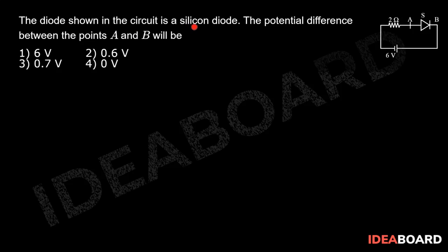The diode shown in the circuit is a silicon diode. The potential difference between the points A and B will be: So here we can see the diode is in reverse bias condition because its N side is connected to a greater potential and its P side is connected to a lower potential.